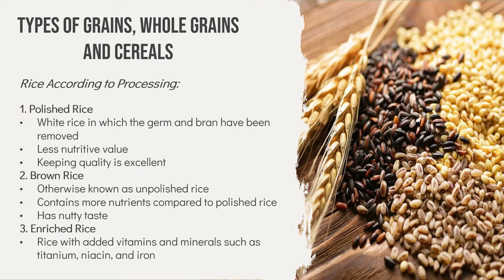These are the types of rice according to processing. First, we have polished rice — white rice in which the germ and bran have been removed. It has less nutritive value but excellent keeping quality. Polished rice has been milled to remove the husk, bran, germ, and varying amounts of nutrients, leaving a starch-rich grain. It has less moisture, mineral, biotin, niacin, protein, and fatty content than brown or lightly milled rice.